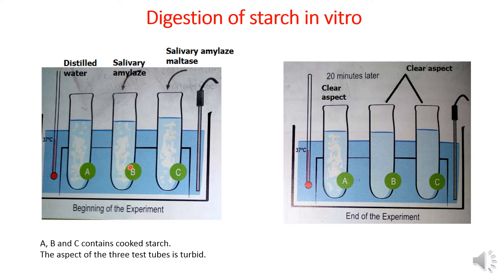Tube B contains salivary amylase — an enzyme found in the saliva — and cooked starch. Tube C contains salivary amylase, maltase, and cooked starch. The aspect of all three test tubes is turbid at the beginning. After 20 minutes, the aspect of tube A remains turbid, while the aspects of tubes B and C become clear.